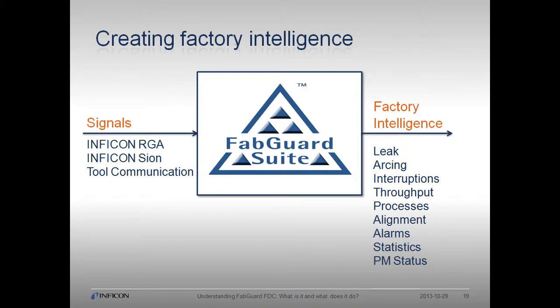Now that we have an idea of what kinds of signals FabGuard can collect, let's look at what factory intelligence it can provide. Questions we can answer include: Is there a leak in the chamber? Were there any arcs during the process? Was the process interrupted? How long did it take to transition between process recipes? How many wafers did each tool process last week? What recipes were run and which were used most? Is the robot properly aligned? What was the most frequent tool alarm yesterday? Are my SPC limits appropriately set? How close are my tools to a PM?